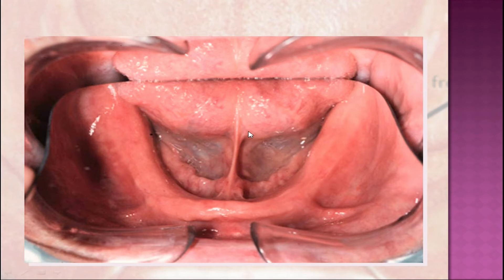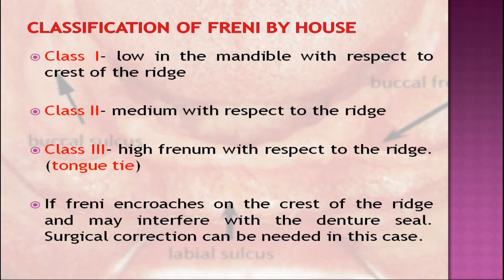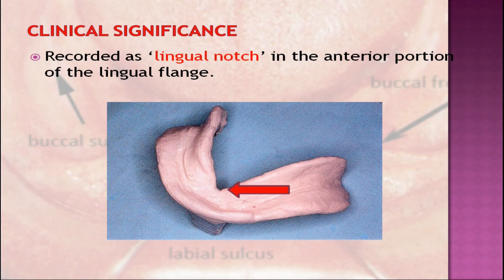A classification was given by House for the frenum depending on the attachment: Class 1 is low in the mandible with respect to the crest of the ridge; Class 2 is medium with respect to the ridge; and Class 3 gives a high frenum with respect to the ridge, also called a tongue tie. In Class 3, the frenum encroaches on the crest of the ridge and may interfere with the denture seal; surgical correction is needed in such cases. It is recorded as a lingual notch in the anterior portion of the lingual flange.